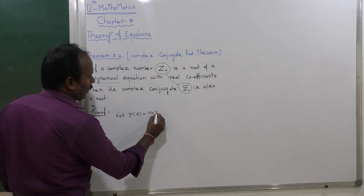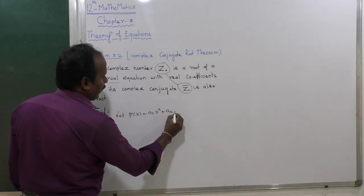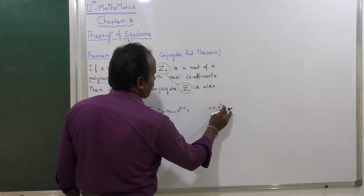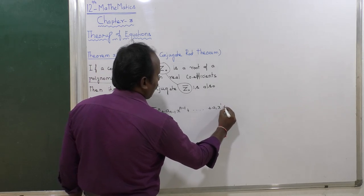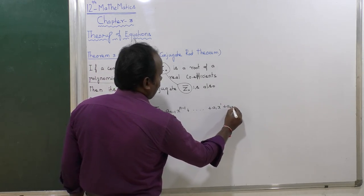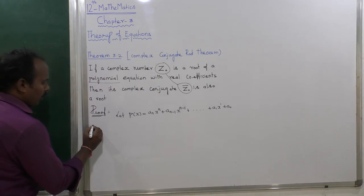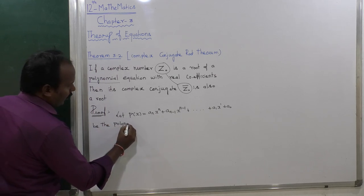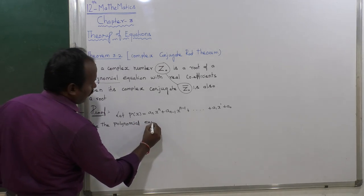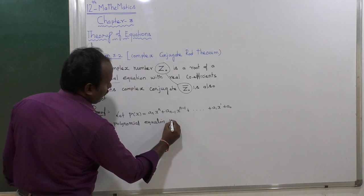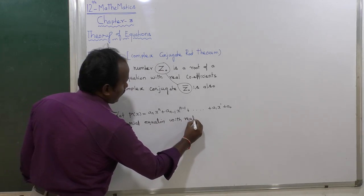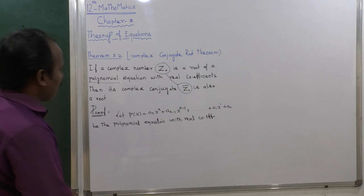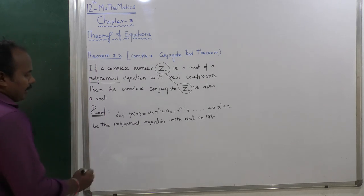First of all, let us consider the polynomial p of x, which is equal to aₙ x to the power n, plus aₙ₋₁ x to the power n minus 1, plus ... plus a₁ x plus a₀. Let this be the polynomial equation with real coefficients.